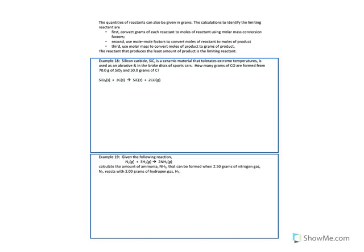We can also give quantities of reactants in grams. The calculations to identify the limiting reactant are similar, with a few extra steps. First, convert grams of each reactant to moles using molar mass from the periodic table. Second, use mole-mole factors to convert moles of reactant to moles of product. Third, use molar mass to convert moles of product to grams of product. The reactant that produces the least amount of product is the limiting reactant.